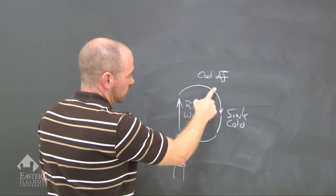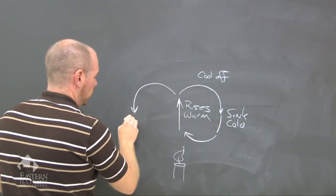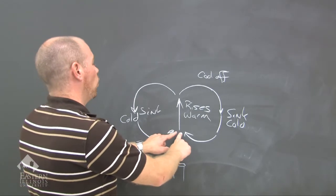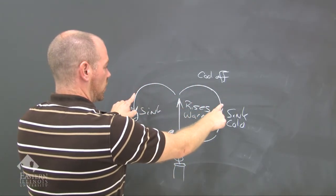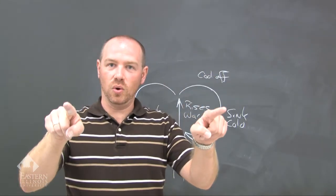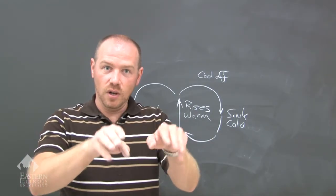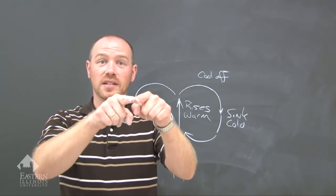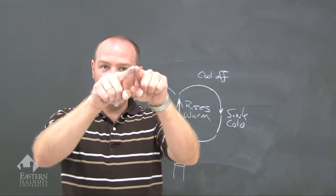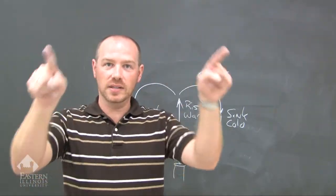The air gets taken back up by the source of heat, creating a cycle: warm, rise, cool off, sink, cold, and it starts the whole process again. This is a change in density — the reason the water or air rises is because it's becoming less dense. When it cools it becomes more dense and sinks. This rise-and-sink cycle is convection.